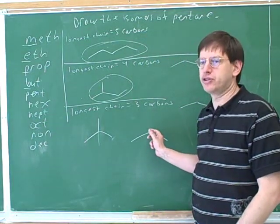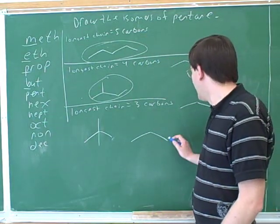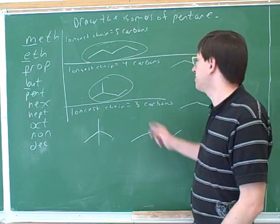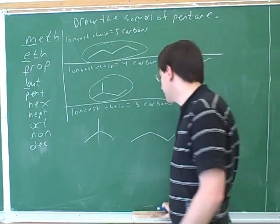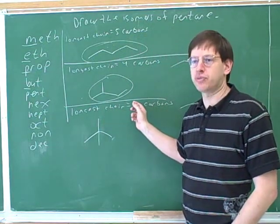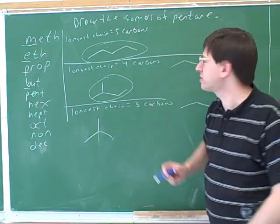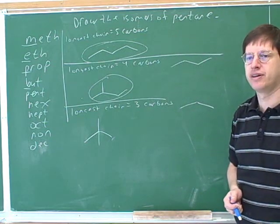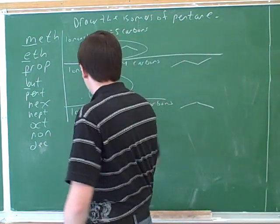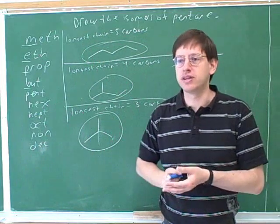Now we have to keep working. Is there any other place that we could put those two last carbons? Well, again, I can't put any of them over here, because then I'd be back to having the longest chain with four carbons. So this is really the only example where the longest chain is three carbons. So what is the answer to the question, how many isomers does pentane have? Three. Yeah, three different isomers.